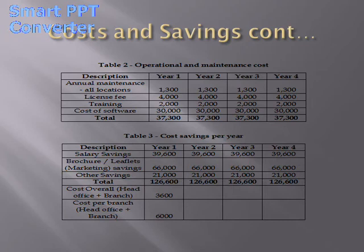By implementing this system, the following operation and maintenance costs have been identified across the branch network. On the cost side, there will be annual maintenance of employees, a license fee for the new system, staff training, and software maintenance costs, totaling approximately US$37,300 annually. On the savings side, there will be salary savings due to reduced staff requirements and savings in marketing since brochures and large campaigns are no longer needed — LCD screens can handle updates. In general, savings are estimated at US$21,000 per year from all branches, bringing total annual savings to US$126,600.